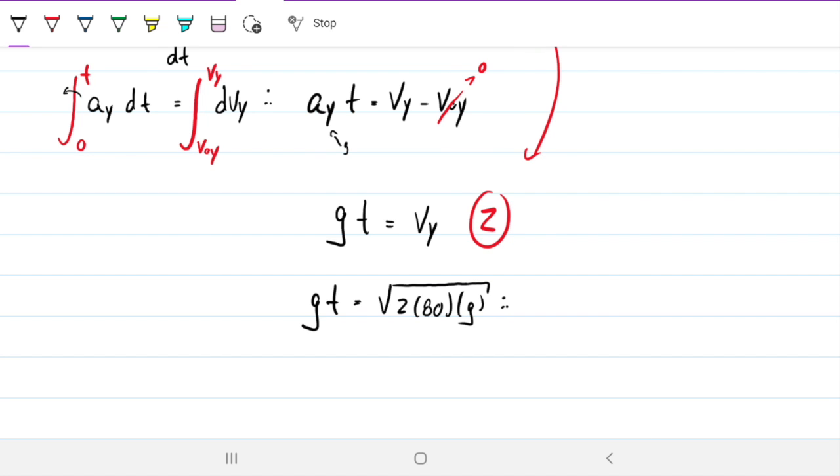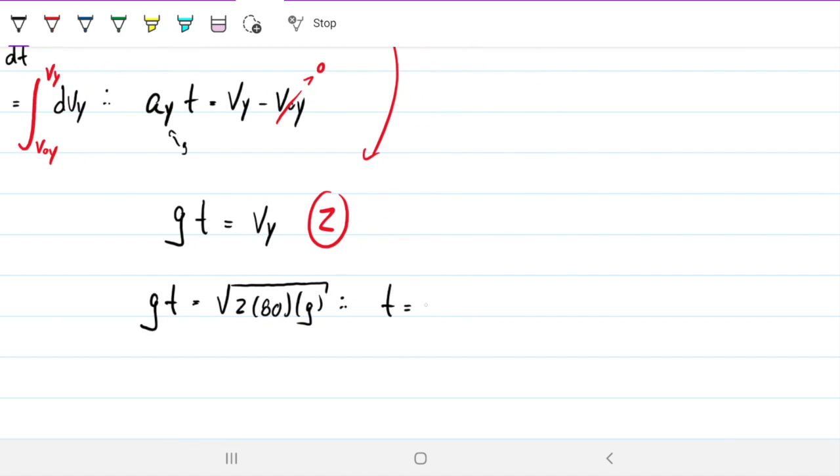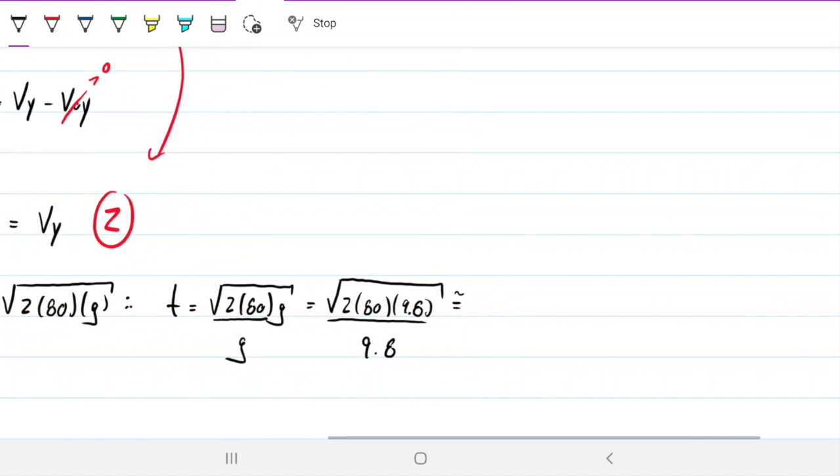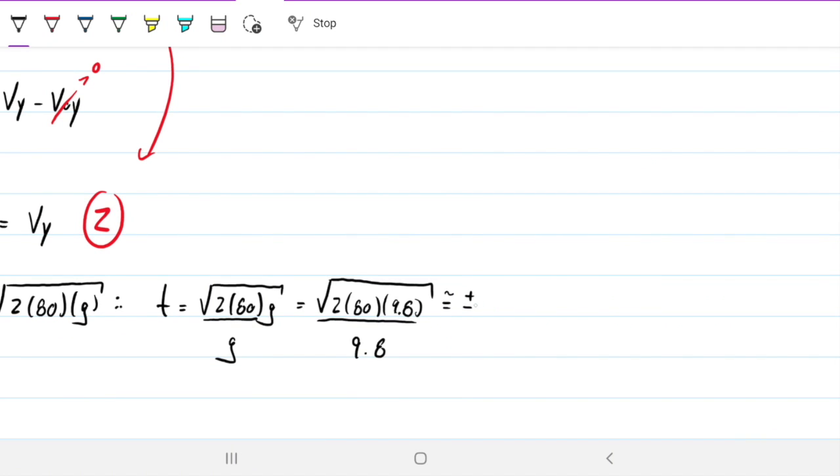We can combine these equations. Gravity times time equals the square root of 2 times 80 times gravity. Therefore, time is the square root of 2 times 80 times gravity divided by gravity. This is the square root of 160 times 9.8. Taking the square root, we disregard the negative value and get about 4.04 seconds.